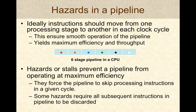However, in practice there are hazards or stalls that prevent the pipeline from operating at maximum efficiency. These arise due to the nature of programs run on the CPU, and may force the pipeline to skip processing instructions in a given cycle. Some hazards require all instructions in the pipeline to be discarded or flushed, and new instructions loaded, to ensure programs operate correctly.